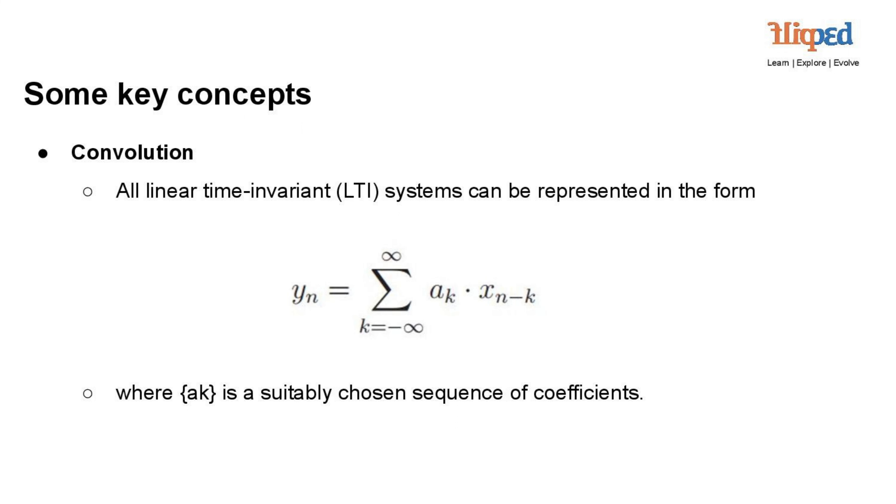y(n) equals sigma k equals minus infinity to infinity a(k) times x(n-k), where y(n) is the output signal at time index n, a(k) is the input signal at time index k, x(n-k) is the impulse response of the system, and the summation is taken over all possible values of k.